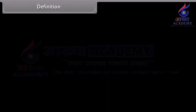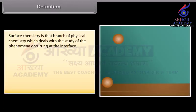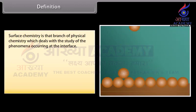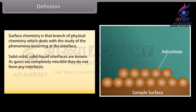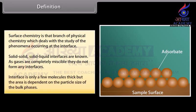Definition. Surface chemistry is that branch of physical chemistry which deals with the study of the phenomena occurring at the interface — that is, the boundary separating two bulk phases. Solid-solid and solid-liquid interfaces are known examples. As gases are completely miscible, they do not form any interfaces. An interface is only a few molecules thick, but the area is dependent on the particle size of the bulk phases.